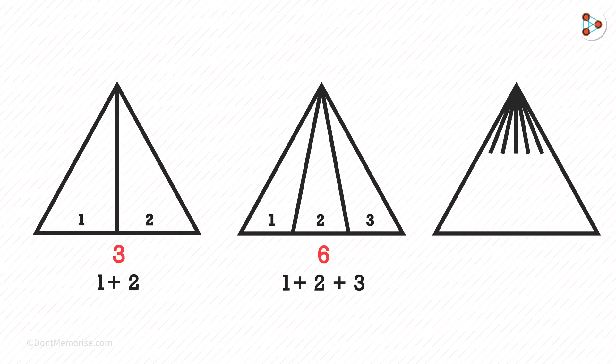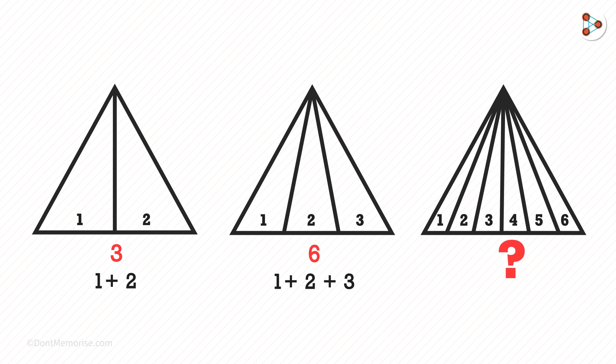Similarly, if we have six parts in a triangle, then what will be the total number of triangles? Correct, it will be the sum of the first six natural numbers, and that will give us the answer as 21.